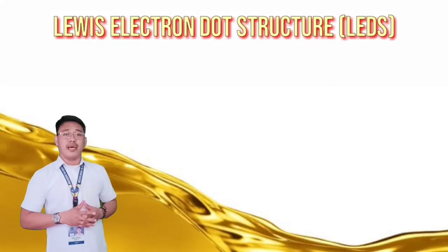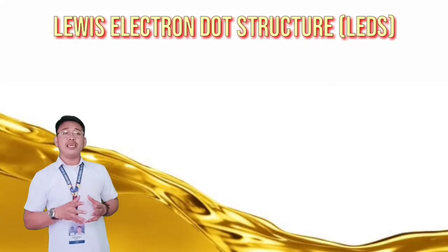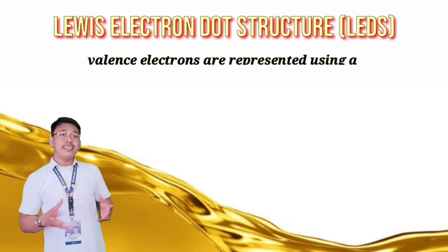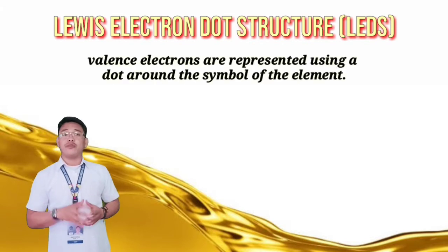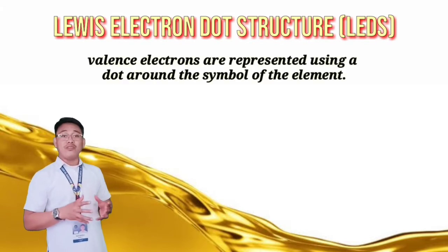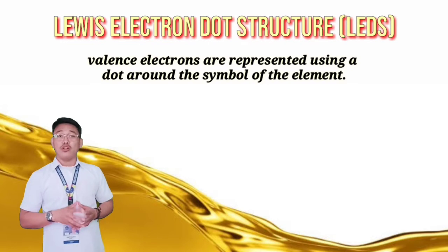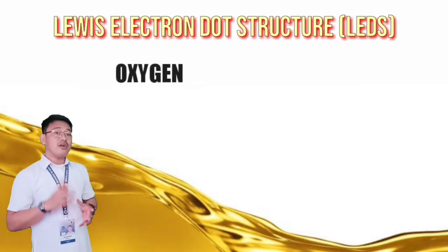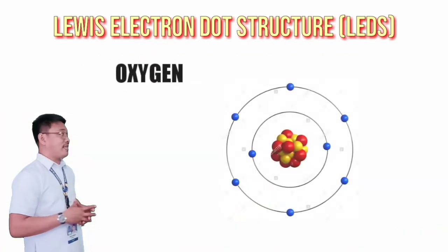When you were in grade 9, you studied the Lewis electron dot structure where the valence electrons are represented using a dot placed around the chemical symbol of the element. Let's use oxygen as an example.